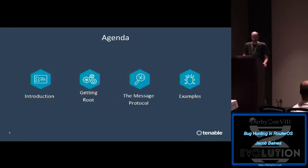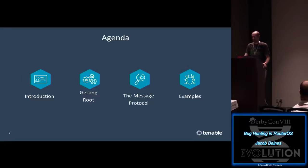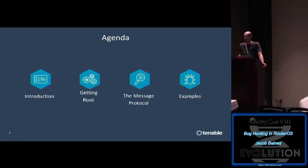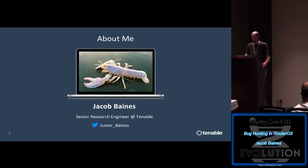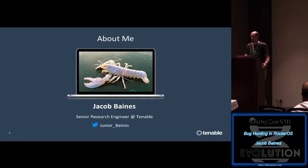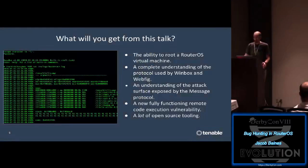This talk is broken down into four parts. In part one I'll introduce myself and RouterOS. In part two I'll explain how to root RouterOS so that when bug hunting, having access to the file system and tools like GDB is important. Part three covers the message protocol, which is fundamental for part four where we'll talk about three different bugs. My name is Jake Baines - I use the handle albino lobster. I currently work at Tenable as a senior research engineer and team lead of the zero-day research group.